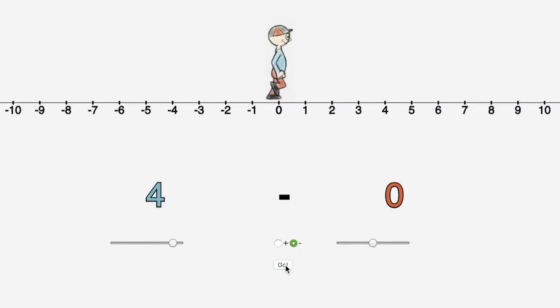When you add a number, you look in the correct direction and walk forwards. Positive four means Stefan looks right and walks forward to plus four. Negative four means Stefan looks left and walks forward to negative four.